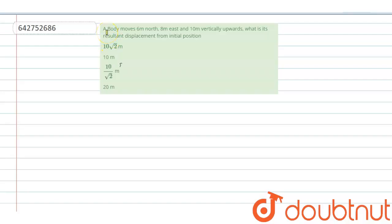Hello students, the question is: a body moves 6 meter north, 8 meter east and 10 meter vertically upward. What is its resultant displacement from initial position?